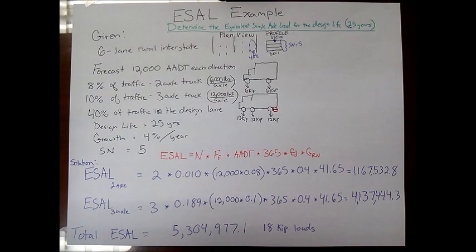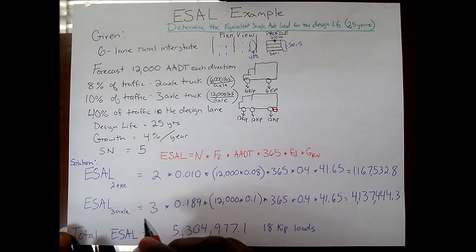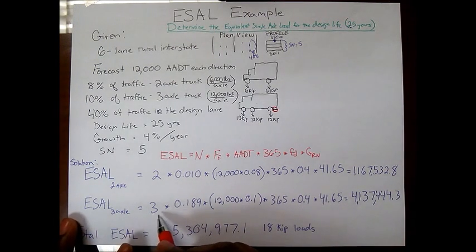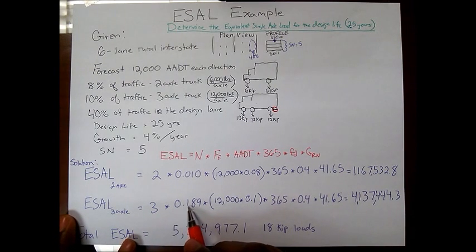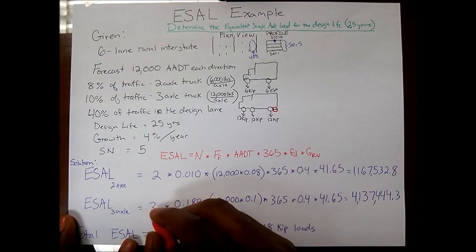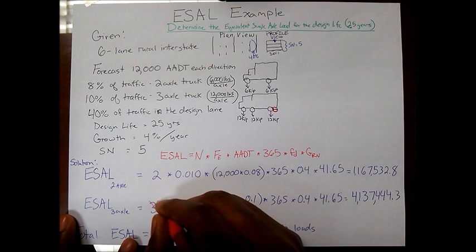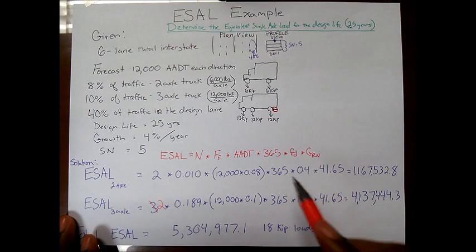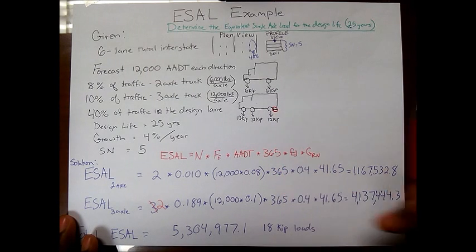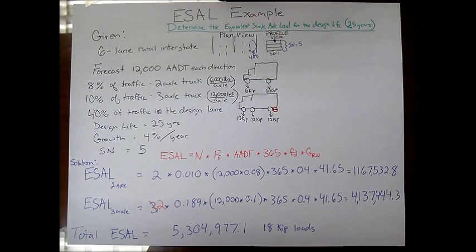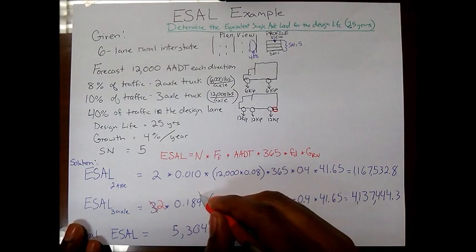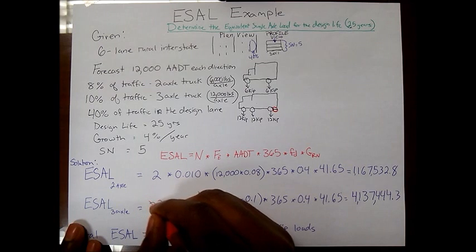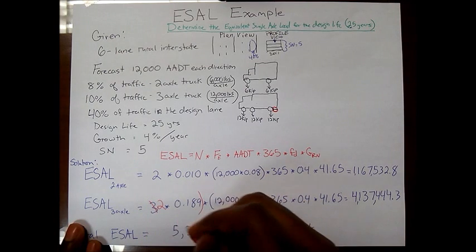So what I would need to do here is add on and take off a couple of things. First of all, instead of it being three single axles multiplied by 0.189, it would only be two single axles. So what I would do in that case is just change that 3 to 2. And then I need to add on this piece here.